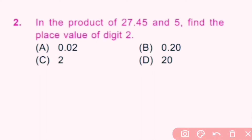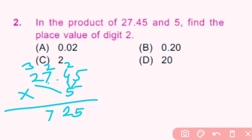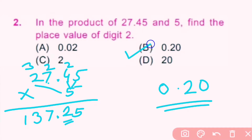Question number 2: In the product of 27.45 and 5, find the place value of digit 2. We first multiply 27.45 by 5. 5 fives are 25, carry 2; 5 fours are 20 plus 2 is 22, carry 2; 5 sevens are 35 plus 2 is 37, carry 3; 5 twos are 10 plus 3 is 13. There are 2 digits after the decimal point, so the answer is 137.25. The place value of 2 is 0.20. B is the correct answer.